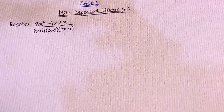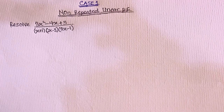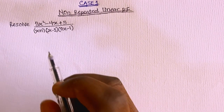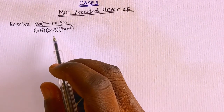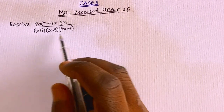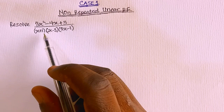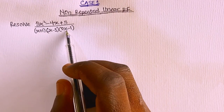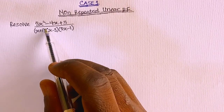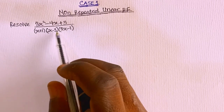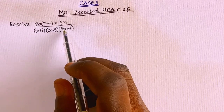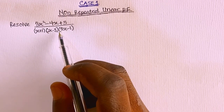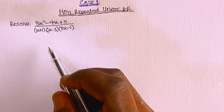This is Case 1 of partial fractions, which is the non-repeated linear partial fraction. Suppose you are asked to resolve this question into partial fractions. If you check the denominator very well, each factor is a linear factor raised to the power of one, which shows that this is a non-repeated linear partial fraction.